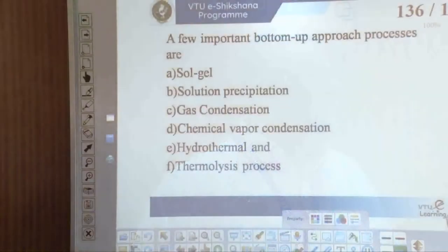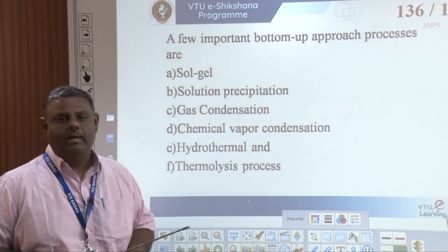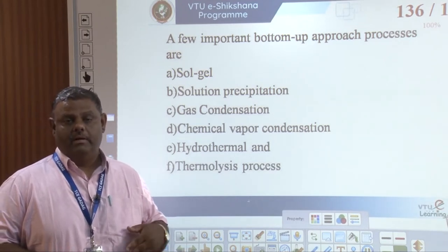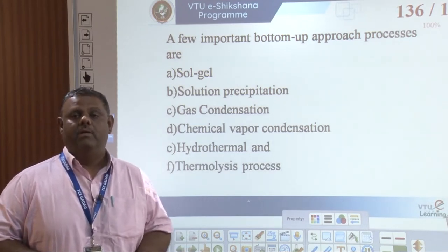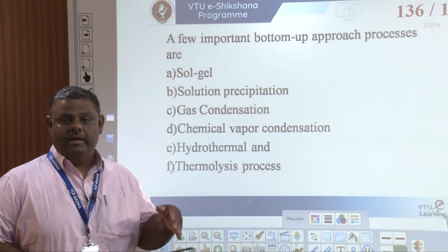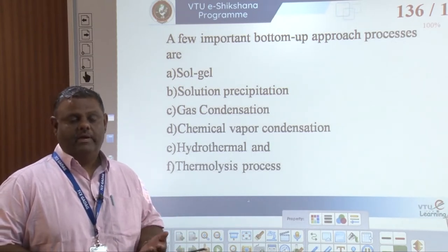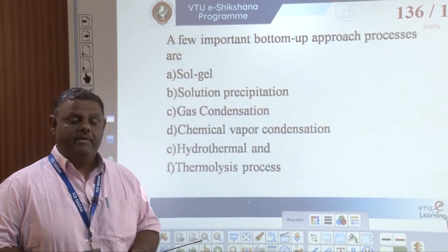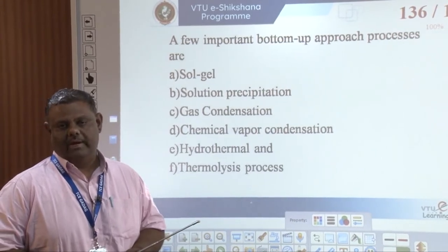To recall: in the sol-gel process, a precursor — usually a metal alkoxide — was dissolved in alcohol and water. On hydrolysis, a sol was formed which slowly converted into a gel. Thereafter, aging was done, and after the aging process, it was dried and densified to obtain the nanomaterial.